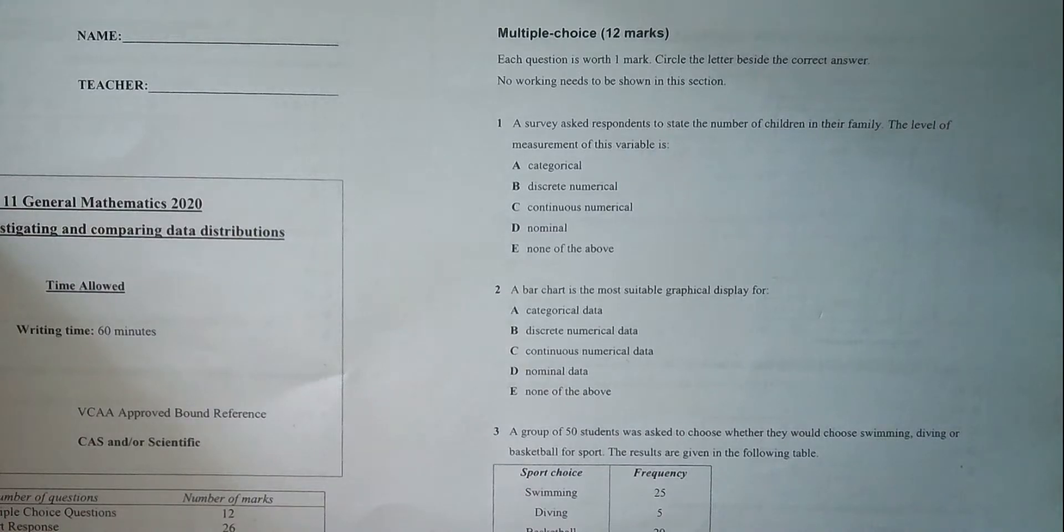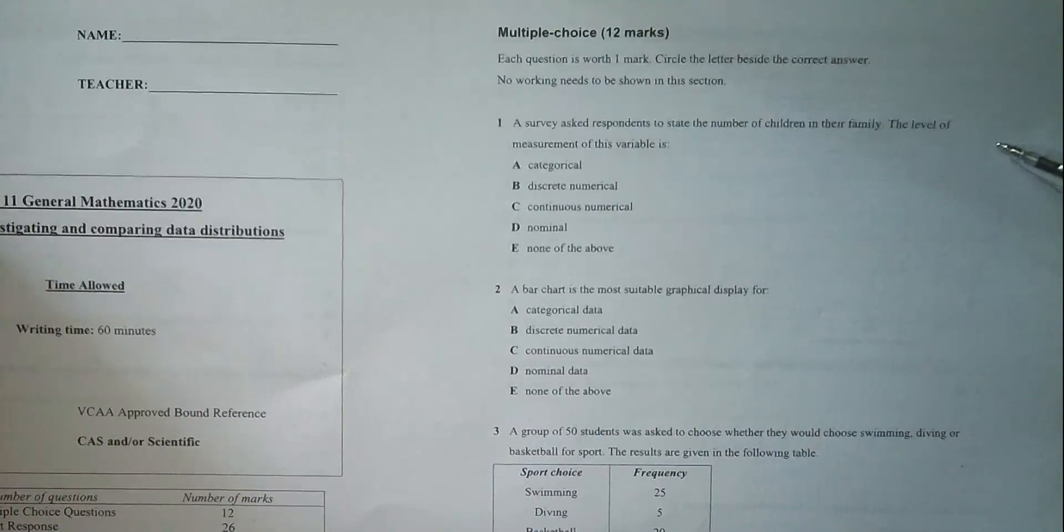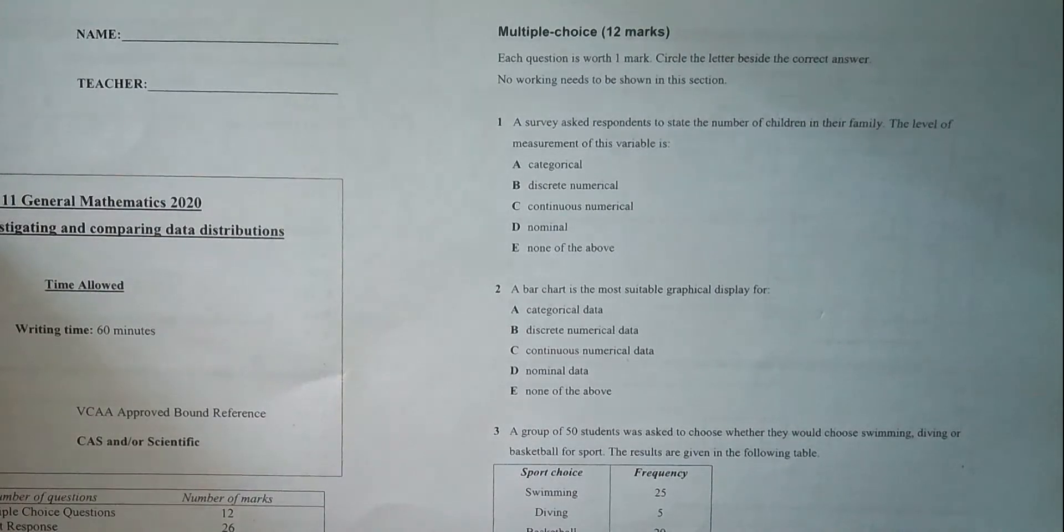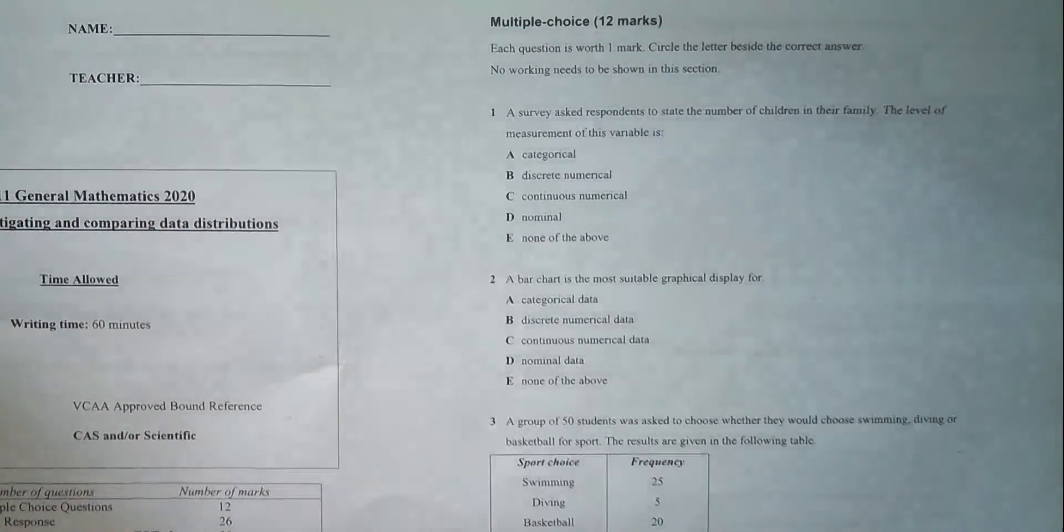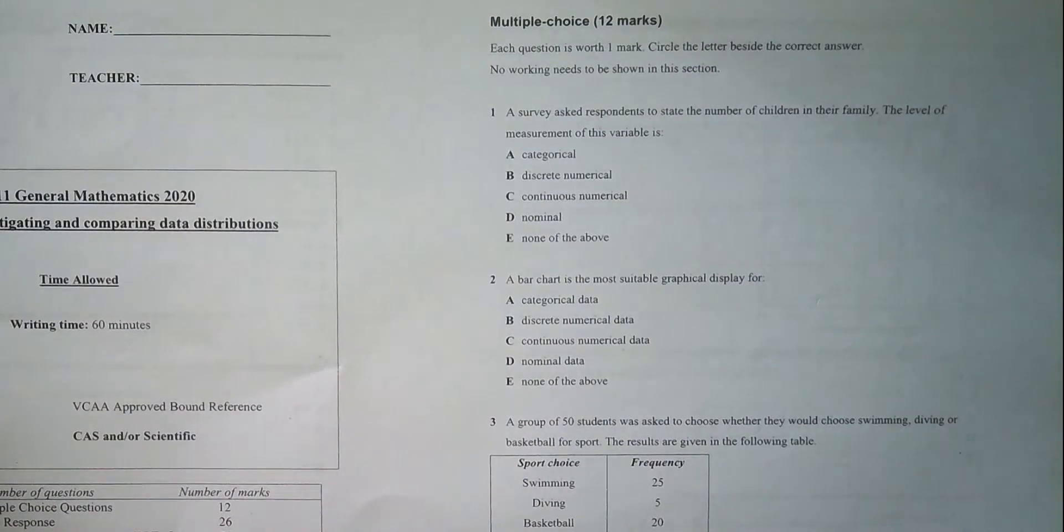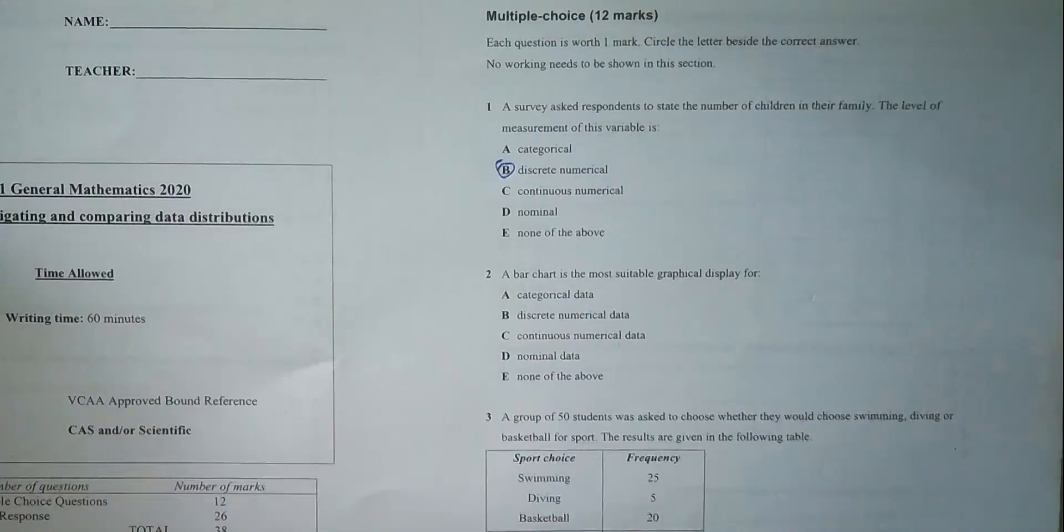A survey asked respondents to state the number of children in their family. The level of measurement of this variable is - it's talking about what sort of data is being collected here. If you're being asked how many children are in your family, that is a countable piece of data, meaning that it's a discrete numerical piece of data. It's numerical because it's a number, not a word, and it's discrete because it's countable, not measured.